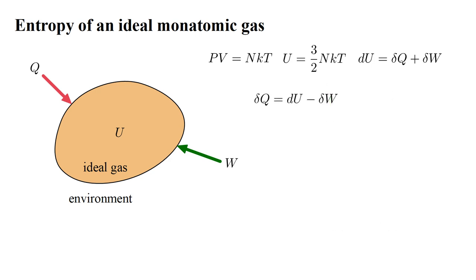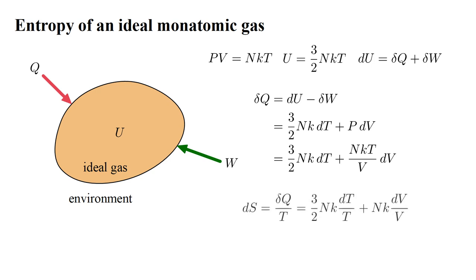Rewriting the first law as delta Q equals dU minus delta W, we can substitute three-halves NK dT for dU, and P dV for minus delta W. Then, from the ideal gas law, we can substitute NKT over V for P. Then, divide both sides of the equation by T. On the left we get delta Q over T, which is dS, the increase in the gas's entropy.